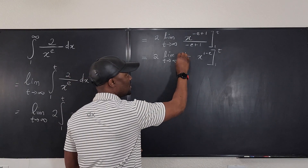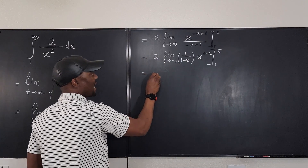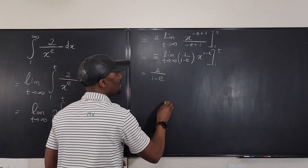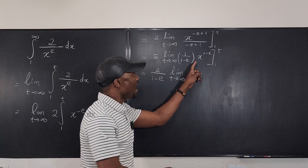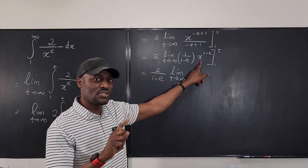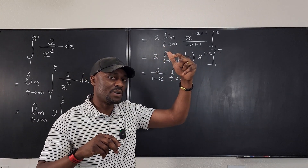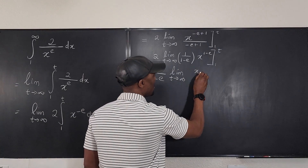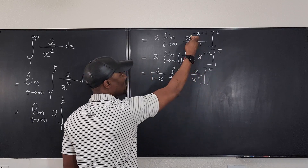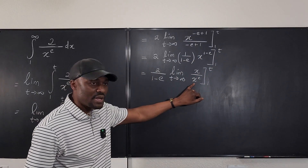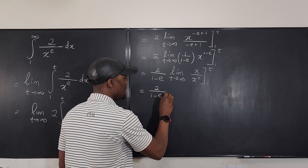This makes it easier to see what we're doing. I've written this expression with the constant pulled out front, so it becomes 2 over 1 minus e, and then I take the limit as t goes to infinity. This expression is the same as x to the 1 times x to the negative e, which equals x divided by x to the e. So it's going to be x over x to the e, evaluated from 1 to t — that's just algebraic simplification.